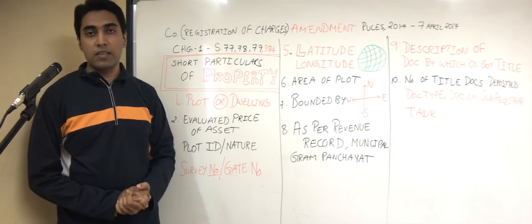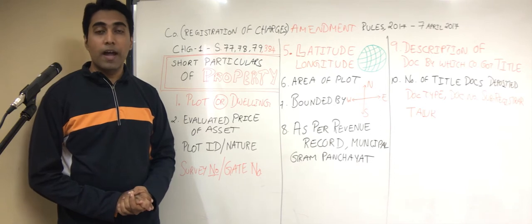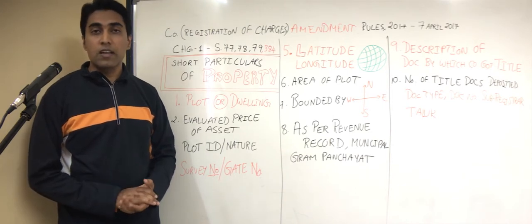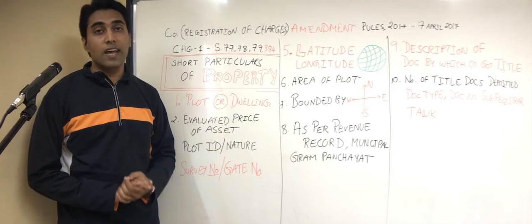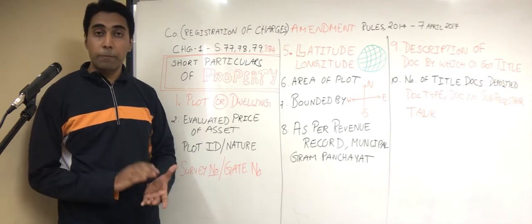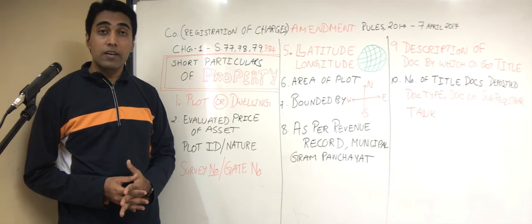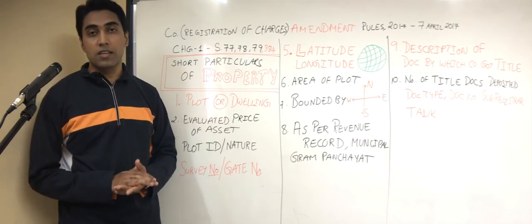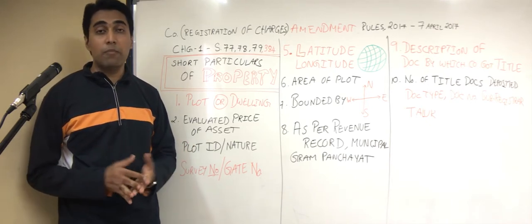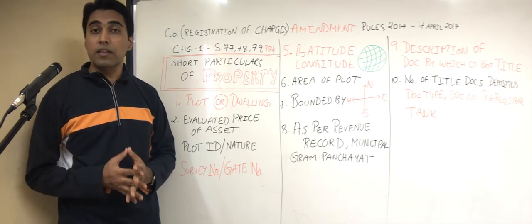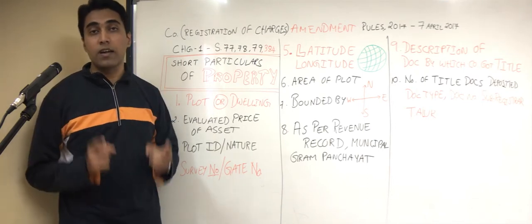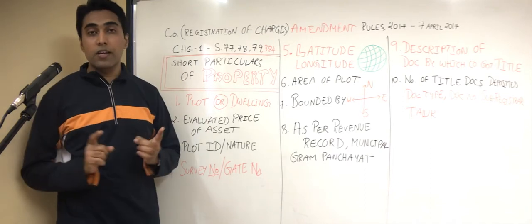The primary reason for this amendment is that many companies used to escape and not comply with the charges-related disclosure requirements. When disclosures are not given properly, the government authorities or the MCA do not have information about whether a charge is real or fictitious. There are many instances where companies, going hand in glove with banks, created charges on fictitious assets — lands and buildings which were not even there — and took crores of rupees. That is the reason the Ministry of Corporate Affairs came up with this provision requiring more disclosures relating to the particulars of the property.